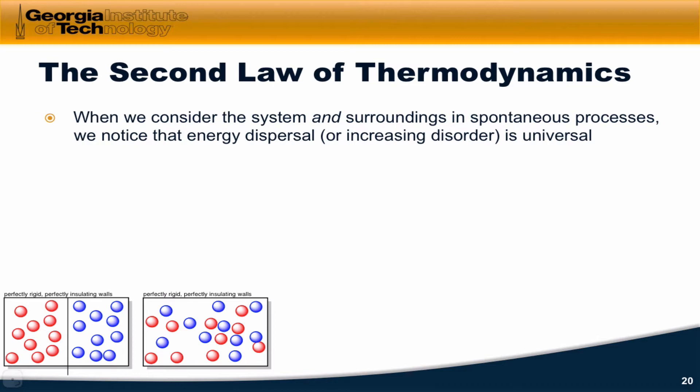One example we've seen already is the idea of two ideal gases separated by a partition, the picture of which you see in the bottom left of the slide. When we remove that partition, the two gases spontaneously mix, and there's an increase in the entropy of the system associated with that.